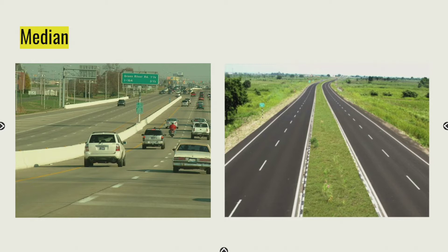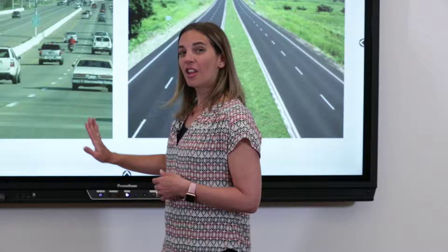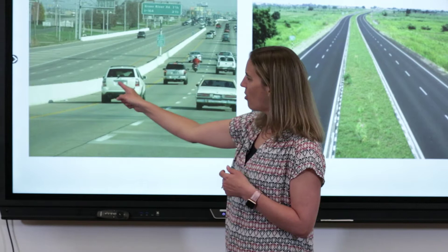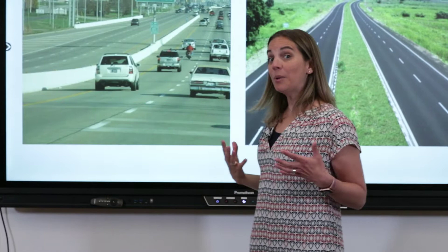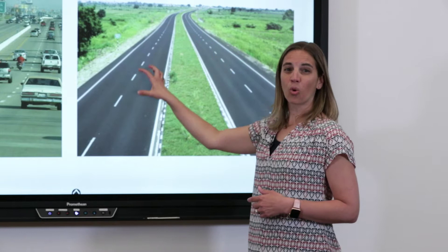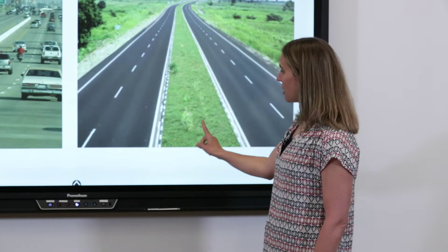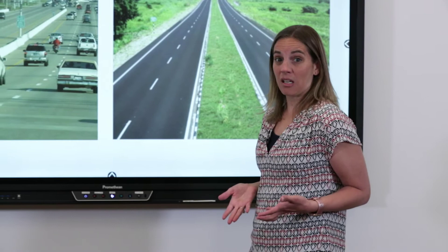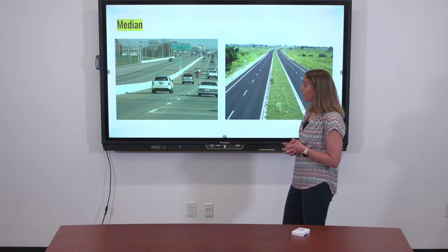I want you to notice this picture. If you've ever driven down the Lloyd Expressway, you've probably seen this — this is right here in Evansville. Notice how on the right-hand side the cars are driving away from us, and on the other side the cars are driving towards us, and right in the middle is this big concrete wall. On a bigger highway you might see a road like this too — two lanes of traffic, one driving away and one coming towards us, with a big green grassy field right in the middle. Both of those are called the median. The median is always right in the middle.